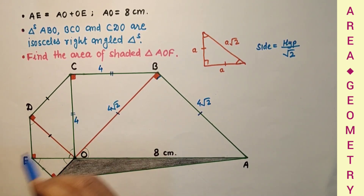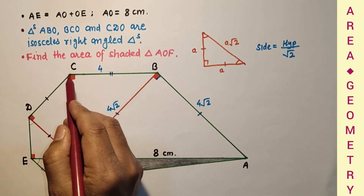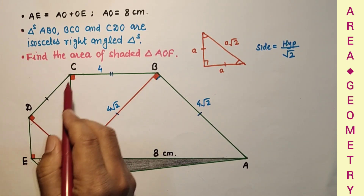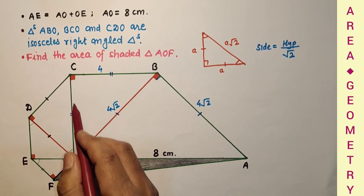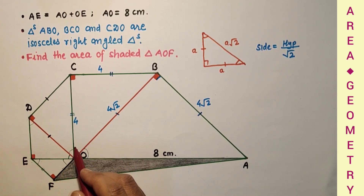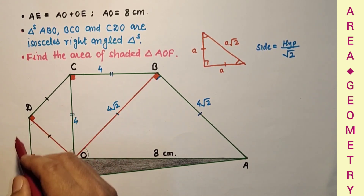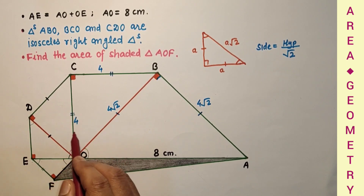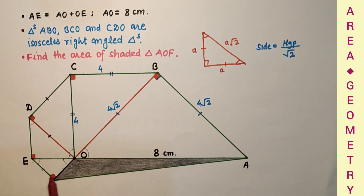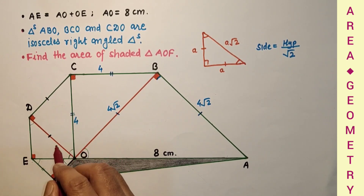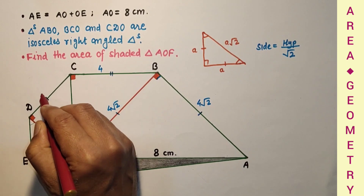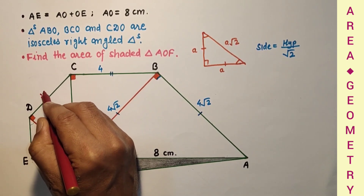Now for triangle CDO, because this is also an isosceles right angle triangle, CO is the hypotenuse. CD and DO will be equal and will each be hypotenuse divided by √2, so 4 divided by √2 equals 2√2. So CD = 2√2 and DO = 2√2.